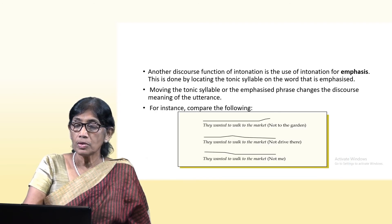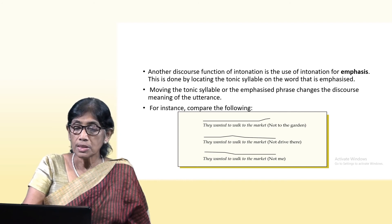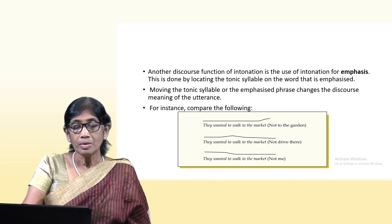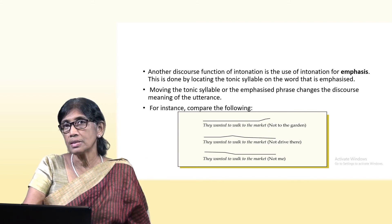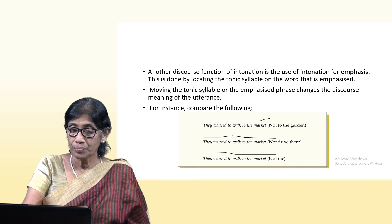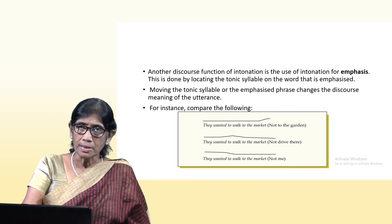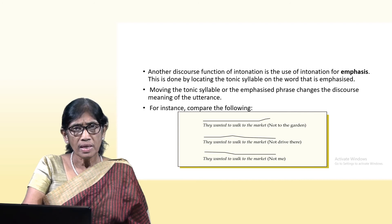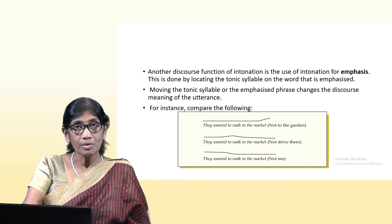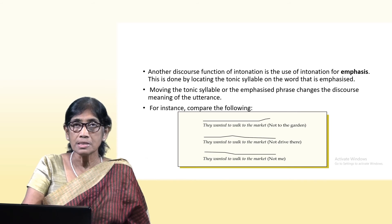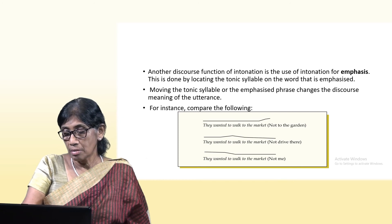Intonation is also used for emphasis by moving the tonic syllable to the emphasized phrase, changing the discourse meaning. The same sentence can have different meanings depending on where emphasis is placed. For example: 'They wanted to walk to the MARKET' (not to the garden); 'They wanted to WALK to the market' (not to drive); 'THEY wanted to walk to the market' (not me). The same sentence has three different meanings when emphasized in three different ways.